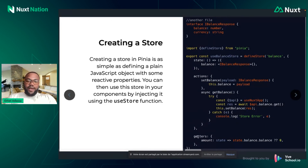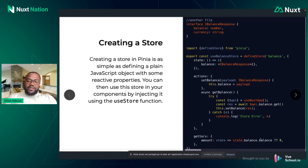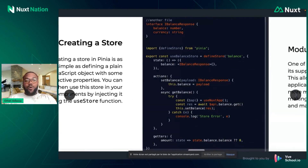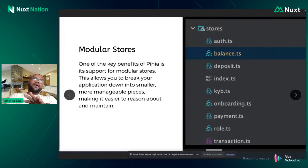We also have getters. Getters are used to derive some state from your actual state. Here, for example, we extract the amount — the amount field from our BalanceResponse. We access the balance data, and if the data is null, we simply return zero. Now let's look at how we can use Pinia in your components.